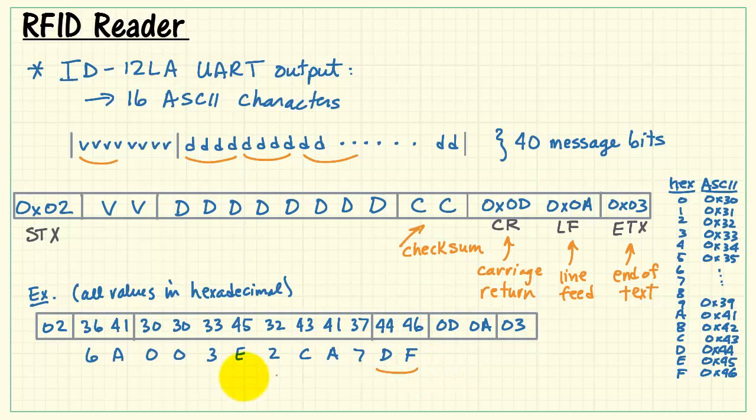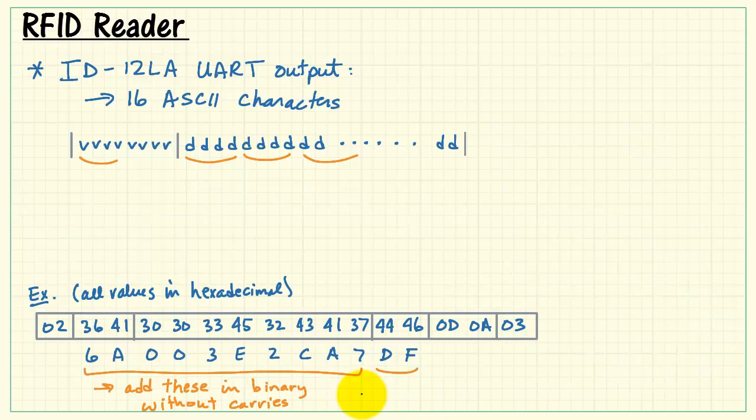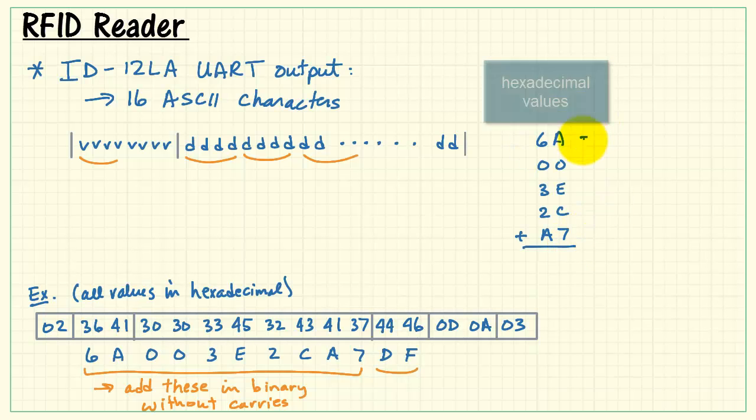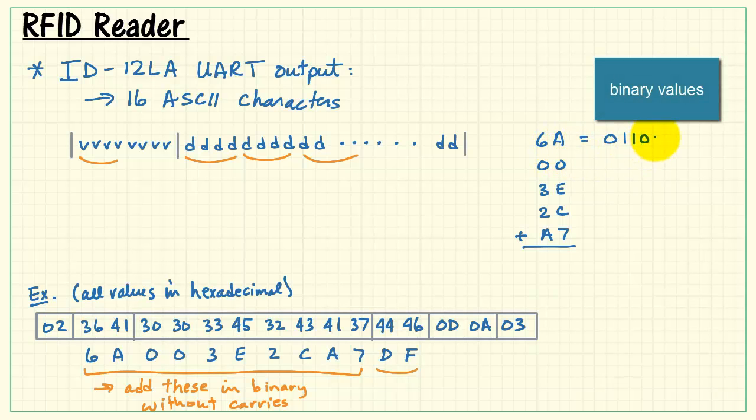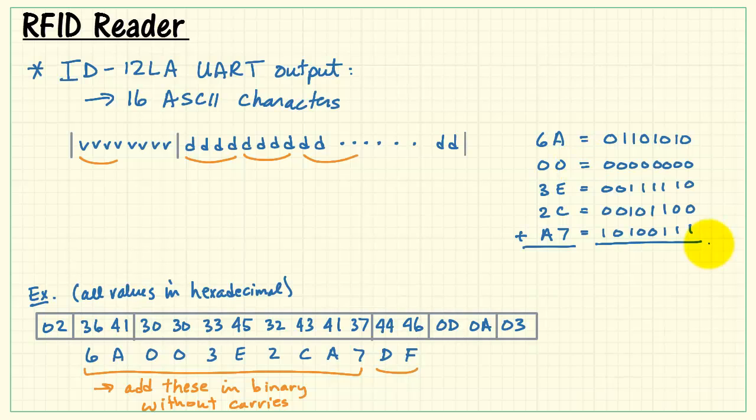Now, the checksum is DF. Let's see how that checksum is calculated. What you want to do is add all of the other values in binary without any carries. Again, this is more clear as a specific example, I think. Here's the hexadecimal values, and then I'll write those out in binary. Do the same thing for the remaining values. Now, add each one of these column-wise without doing any carries from one column to the next.